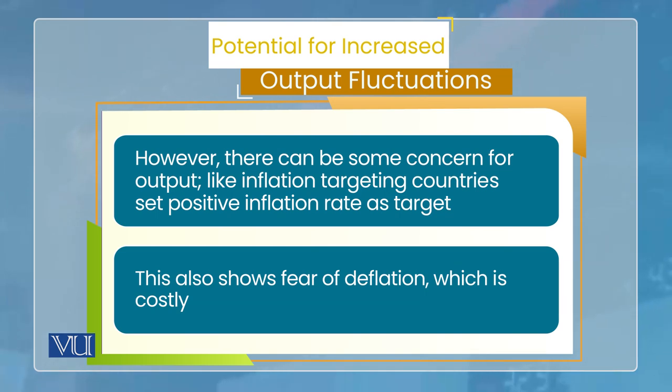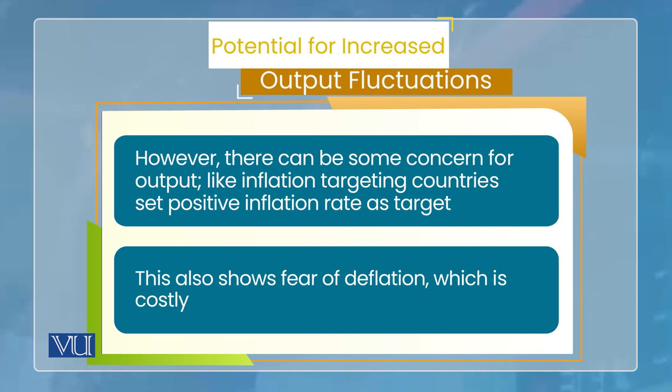جتنے بھی انفلیشن ٹارگٹنگ ریجیم والے سینٹرل بینکس ہیں، ان میں سے کسی کا بھی ٹارگٹ انفلیشن ریٹ زیرو نہیں ہے — کچھ نہ کچھ پازیٹیو ہوتا ہے۔ یہ پازیٹیو ٹارگٹ رکھنا خود آؤٹپٹ کا کنسرن شو کرتا ہے۔ اگر انفلیشن ریٹ کو زیرو پر ٹارگٹ کیا جائے تو آؤٹپٹ کا لاس بہت زیادہ ہو سکتا ہے جب بھی پالیسی ٹائٹ کرنی پڑے۔ لیکن اگر ٹارگٹ 2%, 3%, یا 4% رکھا جائے، تو اس کا مطلب ہے کہ آپ صرف انفلیشن پر فوکس نہیں کر رہے — کچھ نہ کچھ آؤٹپٹ کے لیے بھی کنسرن شو کر رہے ہیں۔